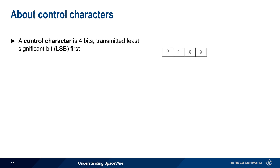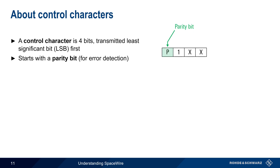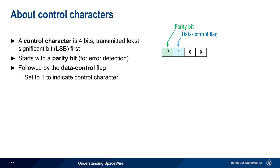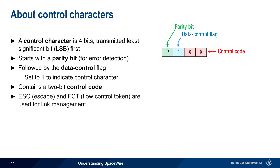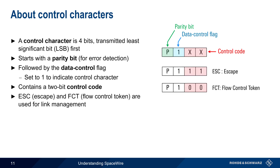The other type of character is control characters, which are four bits long and are also transmitted least significant bit first. All control characters start with a parity bit for error detection, and the data-control flag is set to one to indicate a control character — recall that this bit was set to zero for a data character. After these two bits, there is a two-bit control code that specifies the character type. Two of these characters, escape and the flow control token, are used for link management.